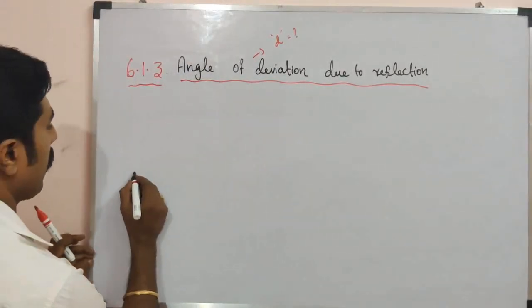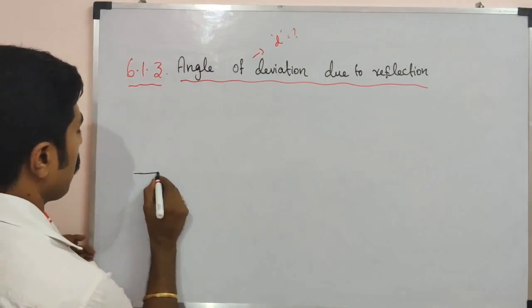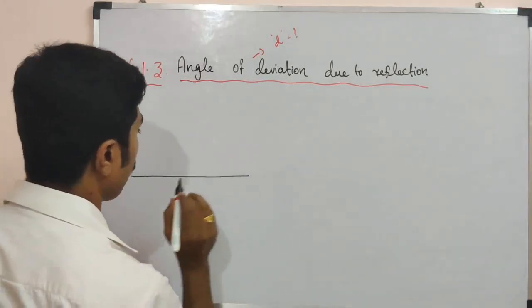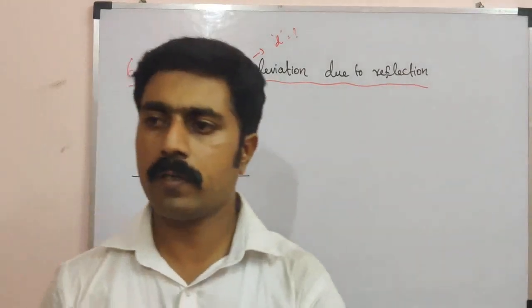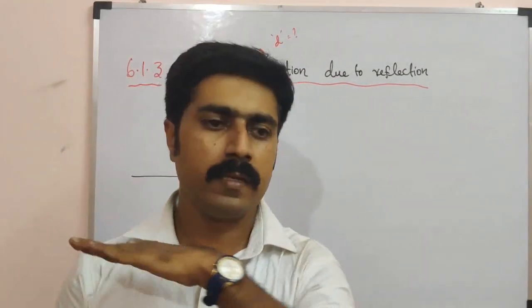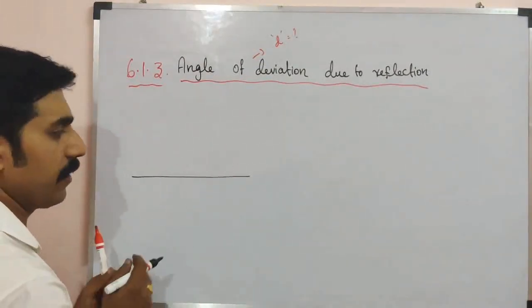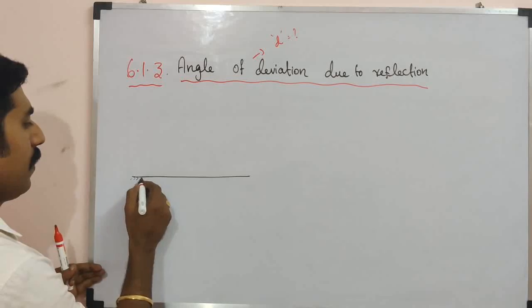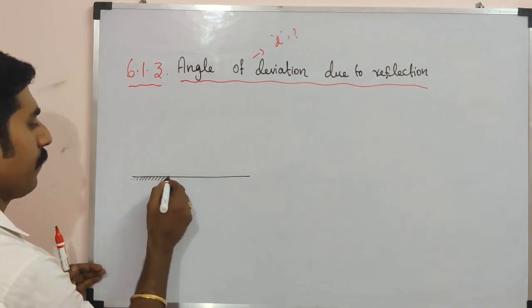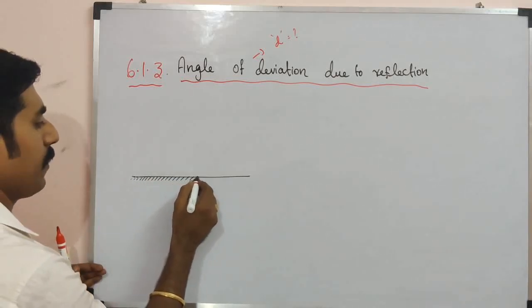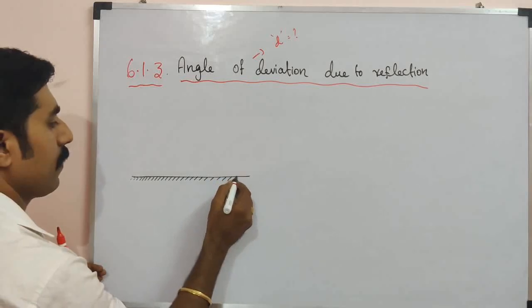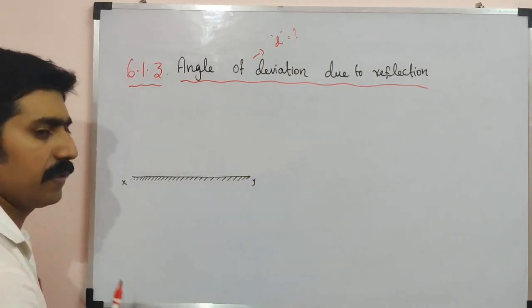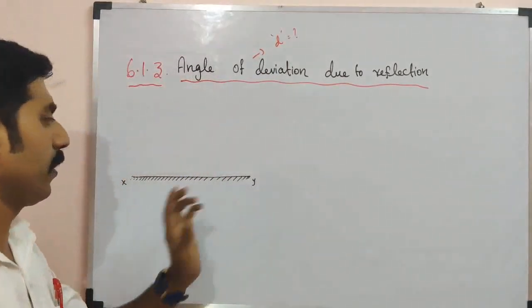For that, first we need to take a glass plate. This is a glass plate with a smooth surface — a fully plain surface. The bottom of the plate is silvered. The reflecting surface is denoted by X and Y.